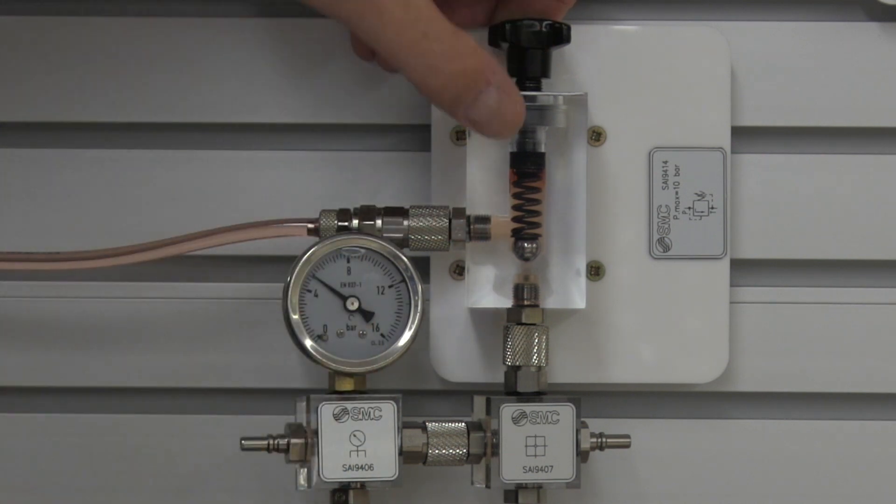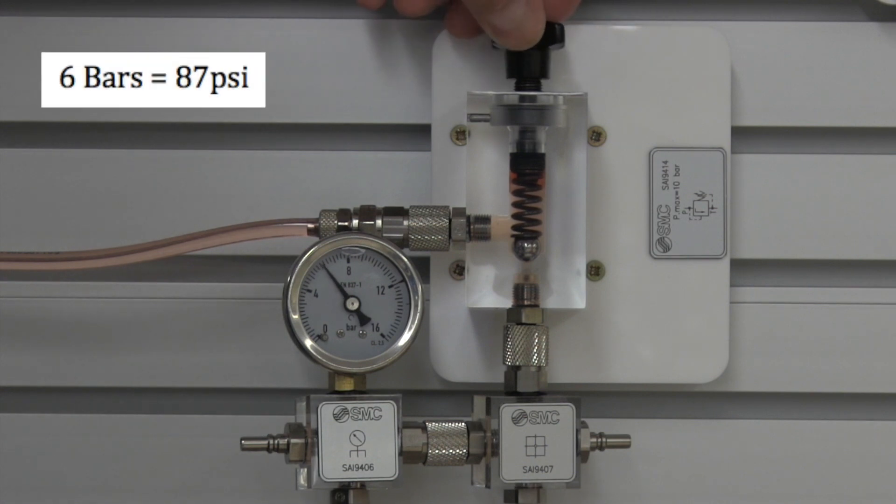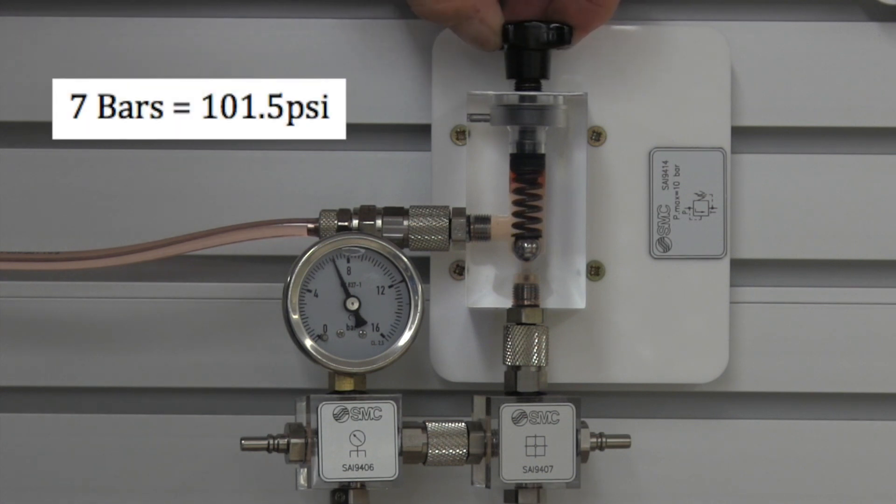And so the load is dictating the spring compression that we need. At this point, five bars to create flow. So now I'm up to six, and I can keep going to seven to eight.